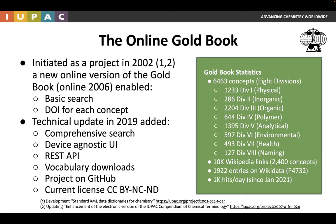It was clear around 2016-2017 that this needed an update. I was fortunate enough to get involved and do that update, and in 2019 we published the new version, which made the whole system database-driven, making it much easier to dynamically generate pages of individual definitions. We now have the capability to link out to other definitions, a device-agnostic UI, a REST API, the ability to download a copy of the vocabulary, and this as a project on GitHub.